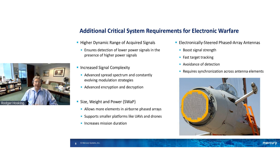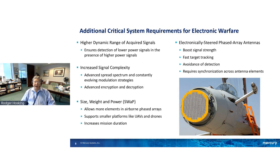Signals are becoming more and more complex in radar to achieve the functions they need to, so the signals being acquired have to have more capabilities to decrypt and decode those signals. SWAP is extremely important, especially for airborne and the smaller UAVs that are becoming increasingly popular. Electronically steered phased array antennas are becoming widely used, with multiple elements capable of steering receive and transmit signal beams - offering advantages over the mechanical dish structures previously used for that kind of steering.